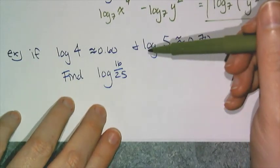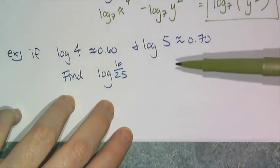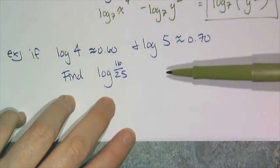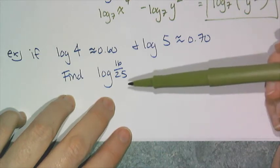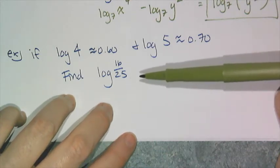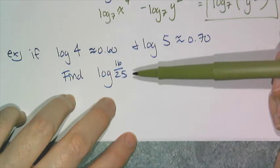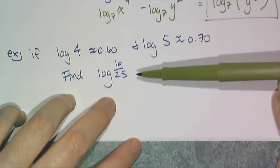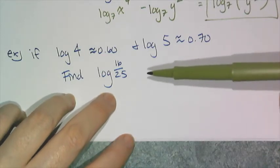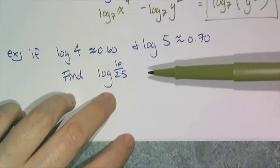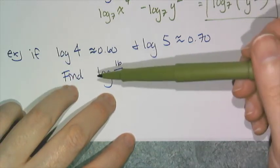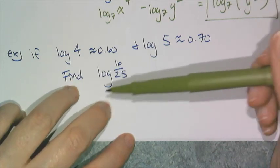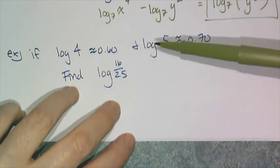So now in this last example, this last example is kind of like a throwback example back to the past pre-calculator days when you couldn't just get a piece of technology and type in log 16 over 25 and get an answer. You had to use these things called CRCs which were filled with tables.